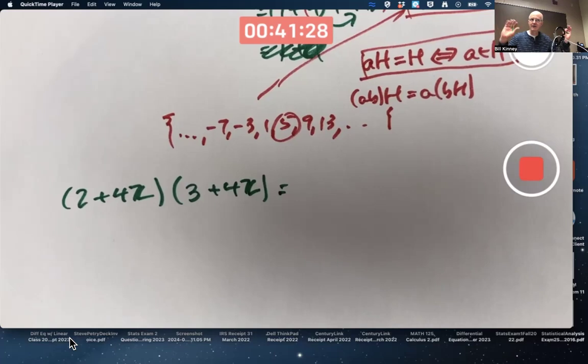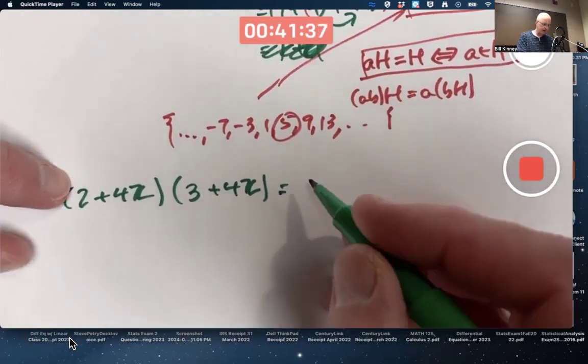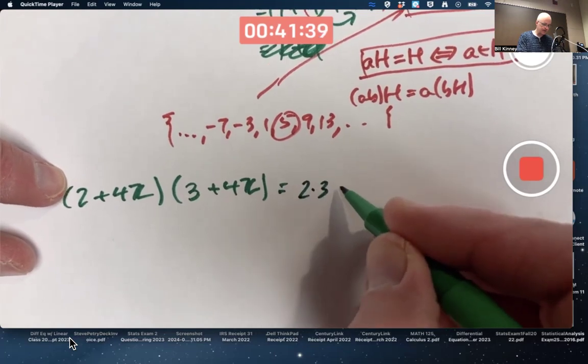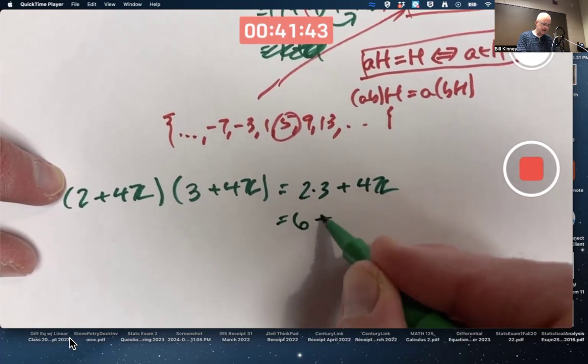You don't do the FOIL method or anything like that. You know, there's not going to be any 16Z squareds, if that's ever confusing. You only multiply the 2 and the 3 here. 2 times 3 plus 4Z. Of course, that's 6 plus 4Z.